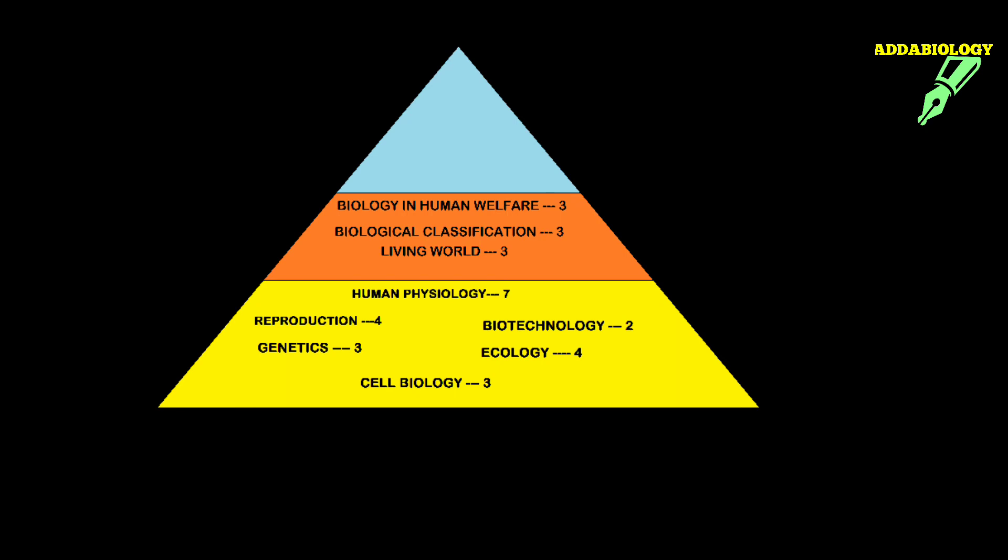These time durations are very much important and you have to plan in such a way that you complete it. Next is structural organization in plants and animals. For this I give you again three weeks. So logically, in 12 weeks you are going to finish all the orange section chapters.